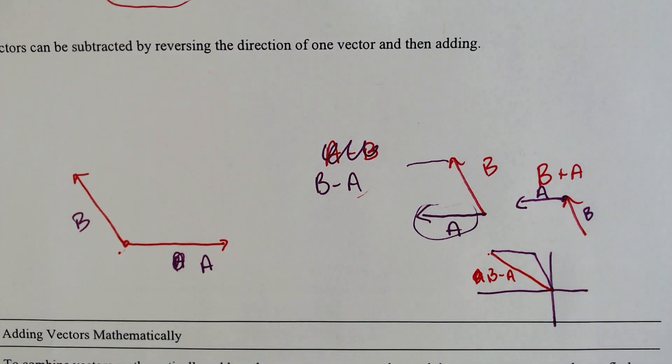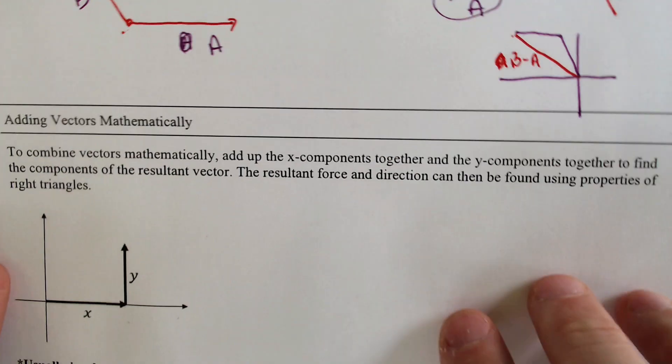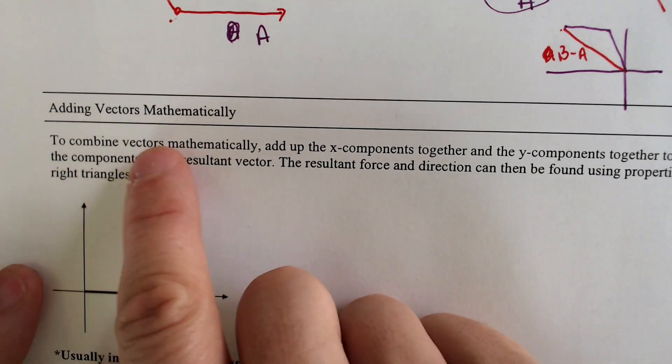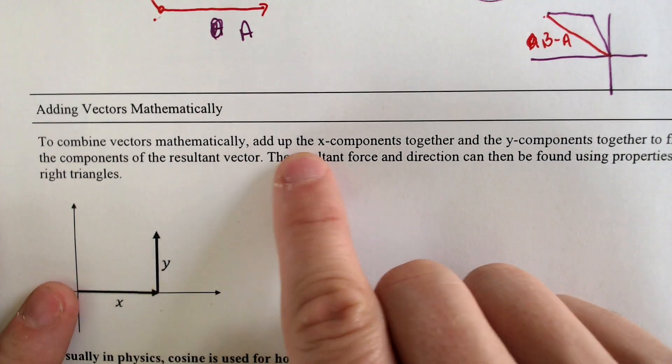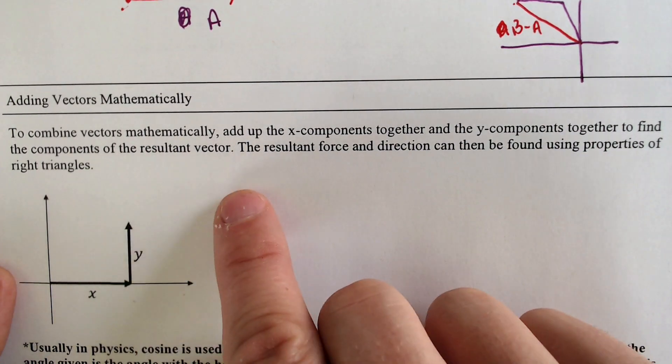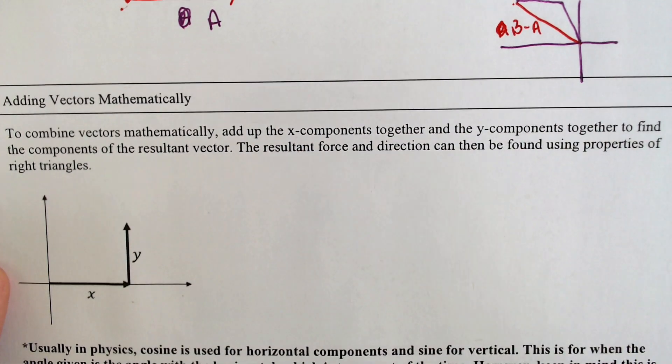One more thing before we quit for the day. To combine vectors mathematically, because this was just visually and visually gets messy. To combine vectors mathematically, add up, simply just add up your x components together and the y components together to find the components of the resultant vector. The resultant force and direction can be found by using the properties of right triangles. So for instance, if we had this vector x and this vector y, the resultant vector would be right here.